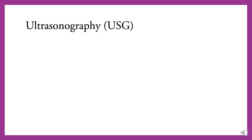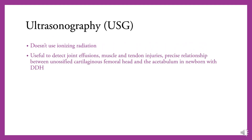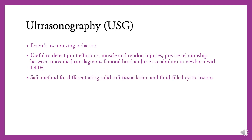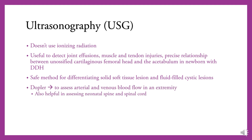Ultrasonography does not use ionizing radiation. It is very useful to detect joint, cushion, muscle, and tendon injuries. It shows the precise relationship between unossified cartilage, femoral head, and acetabulum in infants. It is a safe method for differentiating solid soft tissue lesions from fluid-filled cystic lesions. Doppler can assess arterial and venous blood flow in an extremity, and it is also helpful in assessing the neonatal spine and spinal cord.